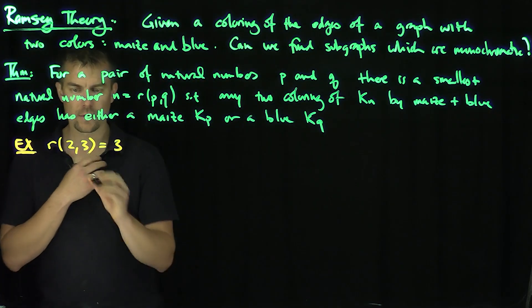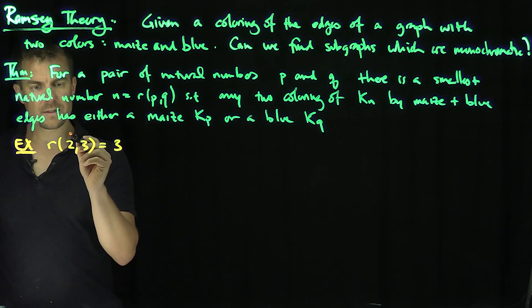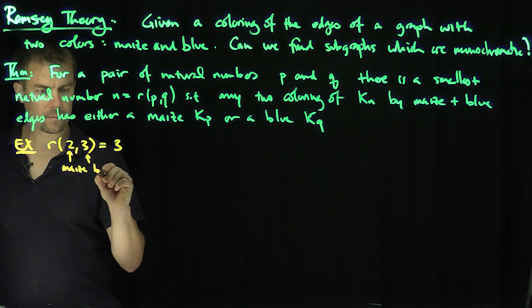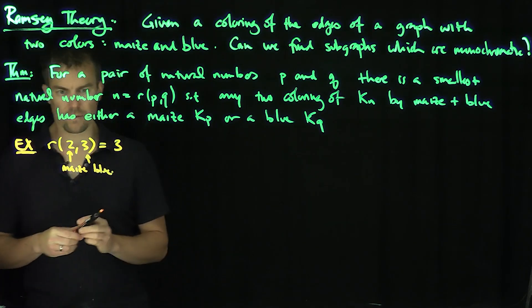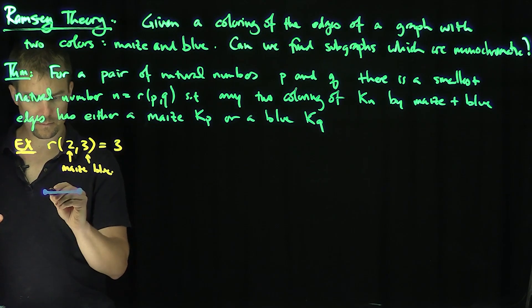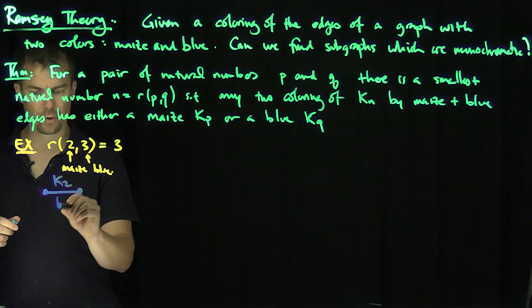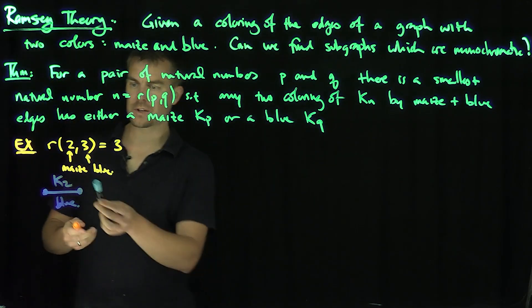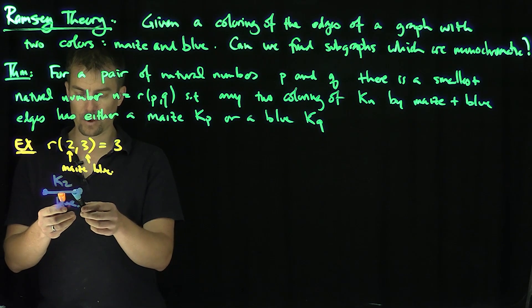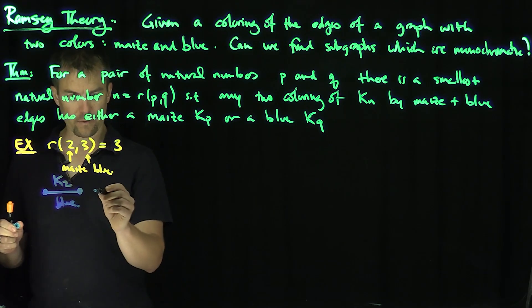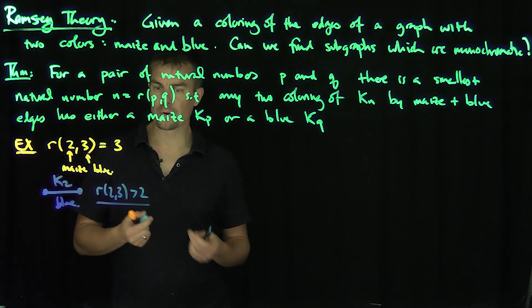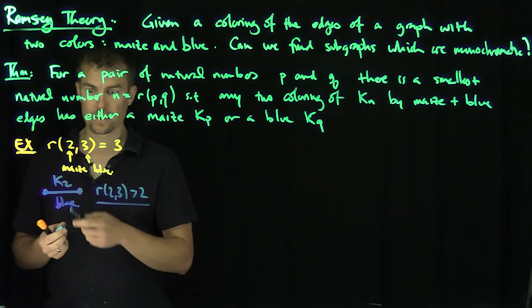So I need to look at this graph over here. This graph is just a solid blue — this K2 over here is a blue K2. But this blue K2 does not contain a K2 which is maize, or a K3 which is blue. It only has a blue K2. So this example shows that R(2,3) has to be bigger than 2. I need a complete graph with more than two vertices in order for this to be true.